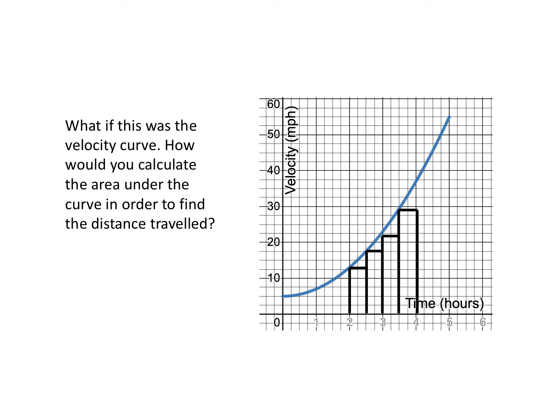Now let's increase the number of rectangles. With more rectangles we would have a better approximation — the areas not counted would be smaller. It still wouldn't be exact, but it would be a better approximation. The more rectangles we use, the better the result.